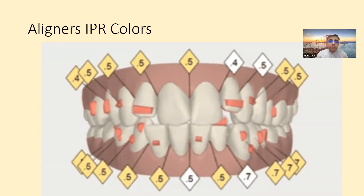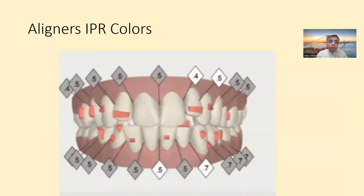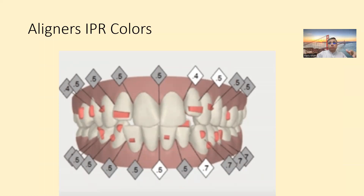At any aligner stage it's mentioned there, but in the ClinCheck for a specific stage they indicate which IPR needs to be done right now or at a future stage. If you see a picture with gray and white, the gray IPR has already been done in the past while the white IPR is to be done in the future.